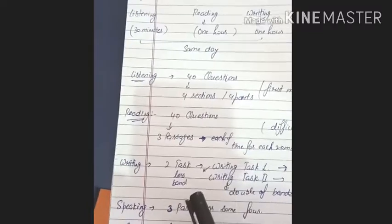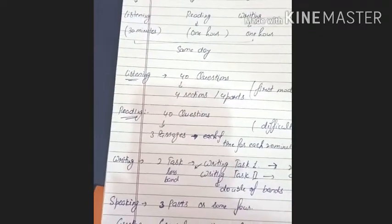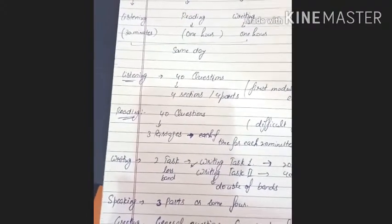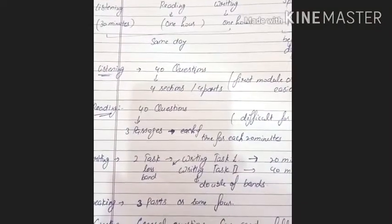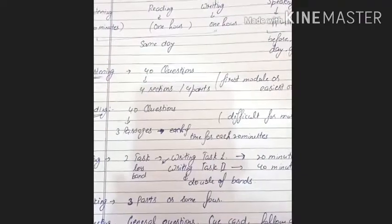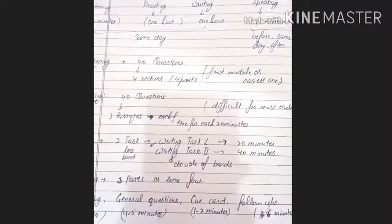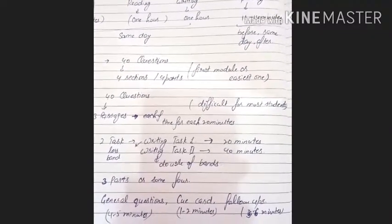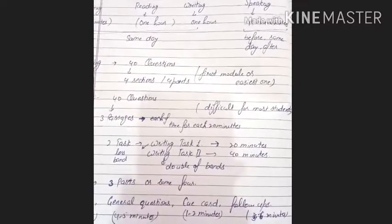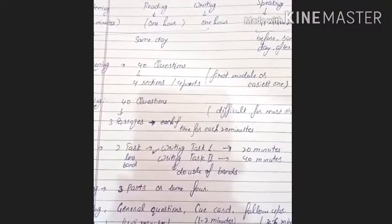Because writing task 1, we have to complete this by answering the question within limit 150 words or above. And for writing task 2, we have limit of 250 words minimum and we can go up the limit. Writing task 1 provides us less band scores and for writing task 2, there is double the bands.